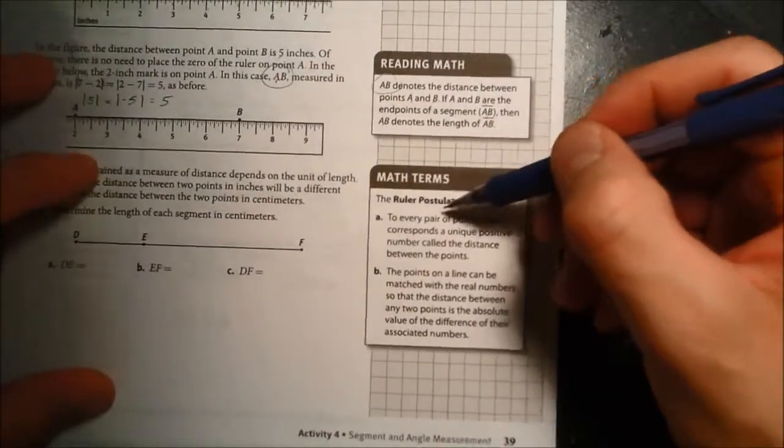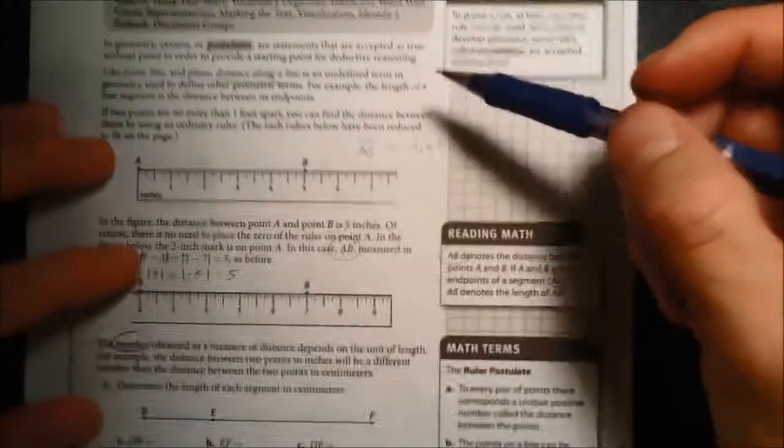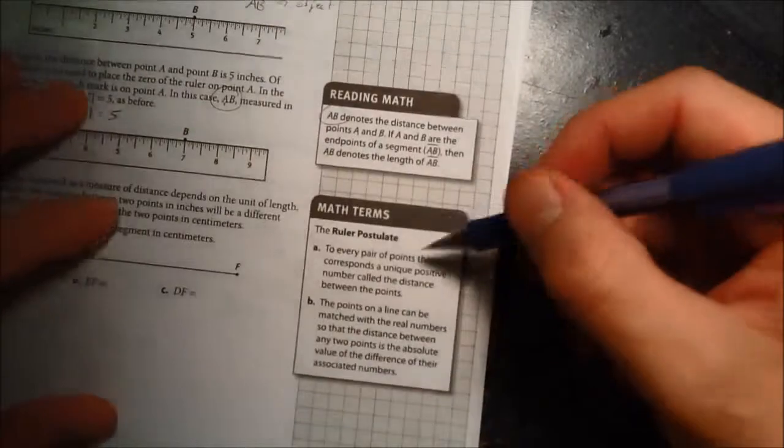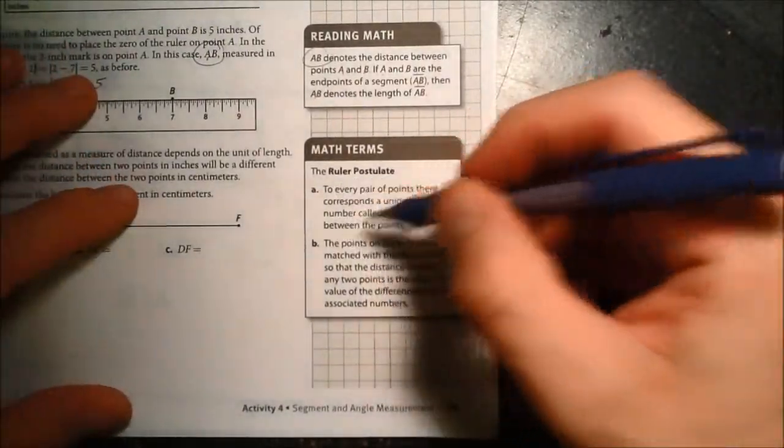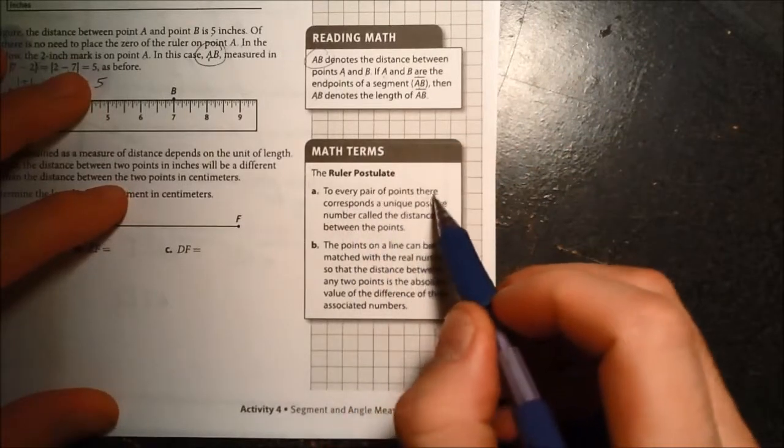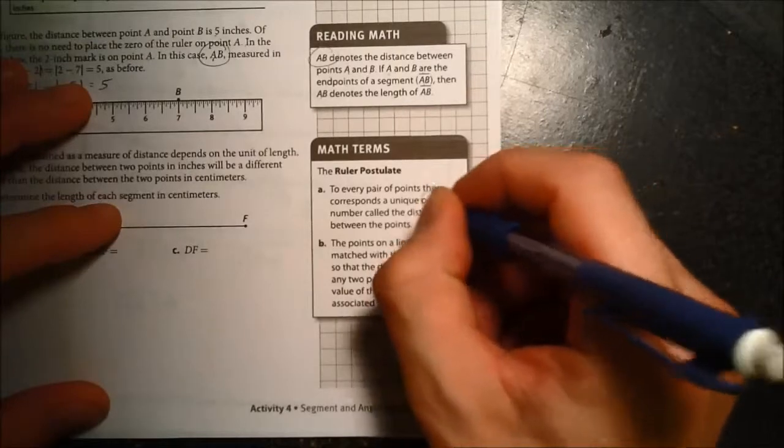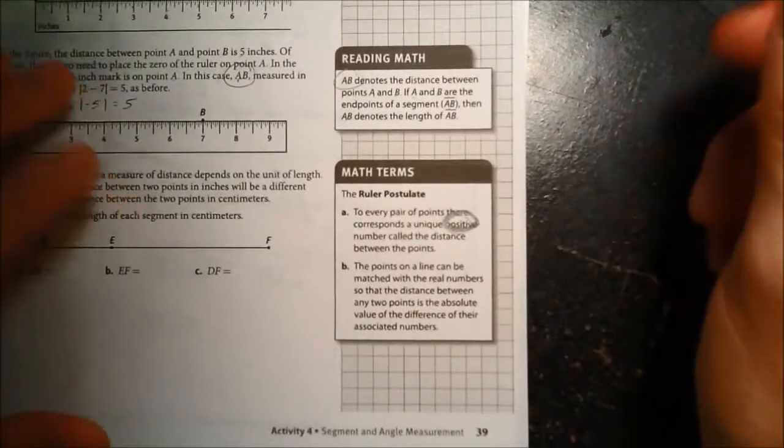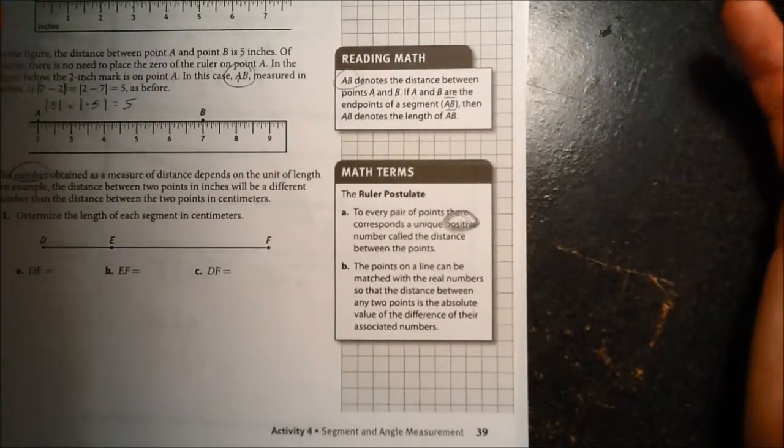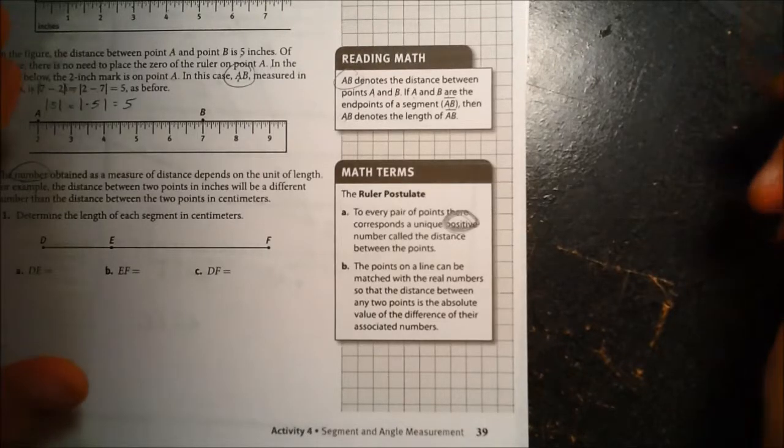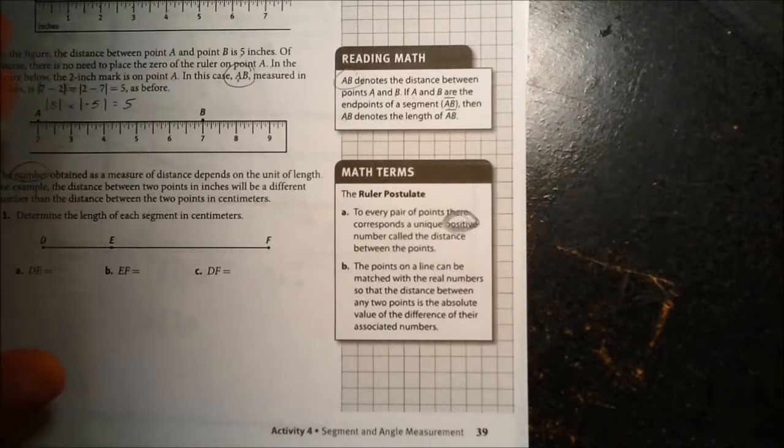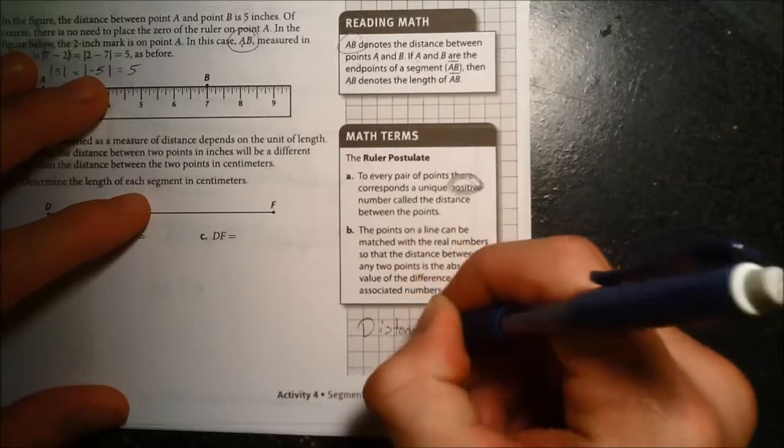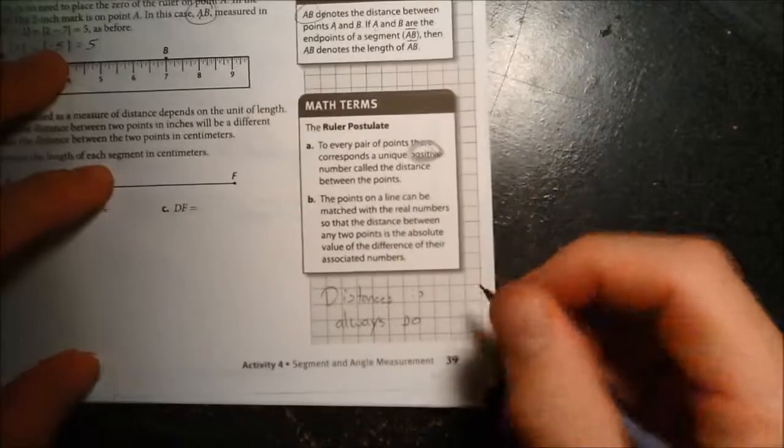Over here in math terms, it says, it introduces the ruler postulate. And remember, a postulate, that's a statement that is accepted as true without proof. So this ruler postulate, this is just common sense. And there's two parts to it. Part A says, to every pair of points, there corresponds a unique positive number called the distance between those points. So if you have two points, there's going to exist a unique positive number. And it just depends on what units you're talking about. Distance is always positive. So please write that down. Distance is always positive.